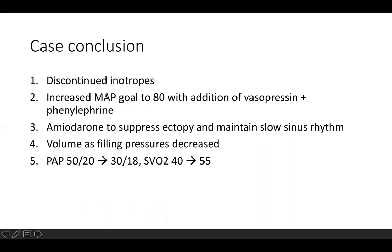In our patient, we stopped the ionodilator that had worsened things, then drove up his MAP with vasopressin, phenylephrine, and norepinephrine. Those maneuvers alone brought his SVO2 from 40% up to the mid-50s, and he started urinating again — things were clearly turning around. Amiodarone suppressed his ectopy and slowed his heart rate from the mid-70s to the 60s. As his right heart filling pressures came down, we gave gentle volume, and interestingly his PA pressures decreased — suggesting the pulmonary hypertension had been entirely due to severe MR from SAM.